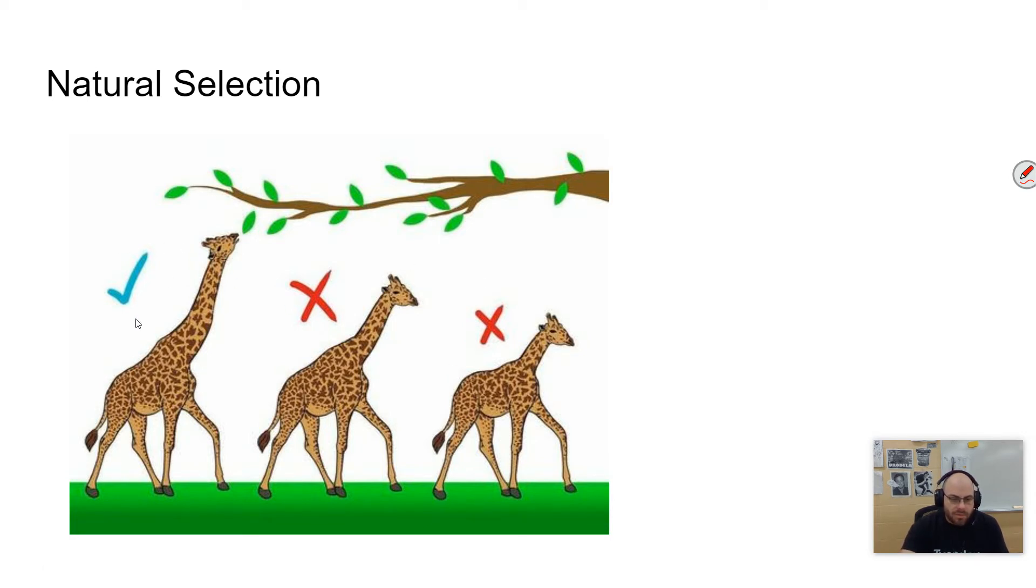These die off, this one survives. That is simply what natural selection is. Natural selection is driven by death, driven by the death of the inferior species. So why do these variations exist?